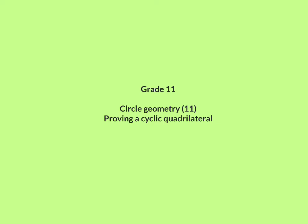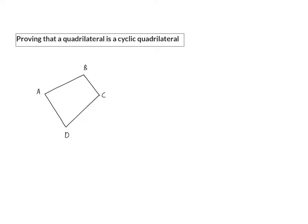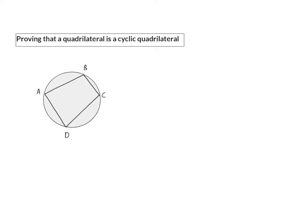In this lesson 11 on circle geometry, we're going to have a look at proving a cyclic quadrilateral. You can be asked to prove that a quadrilateral is a cyclic quadrilateral, meaning that a circle can be drawn around it with all four angles on the circumference of the circle. Even though this circle is not drawn from the start, we need to prove that the theorems about a cyclic quadrilateral are true here.